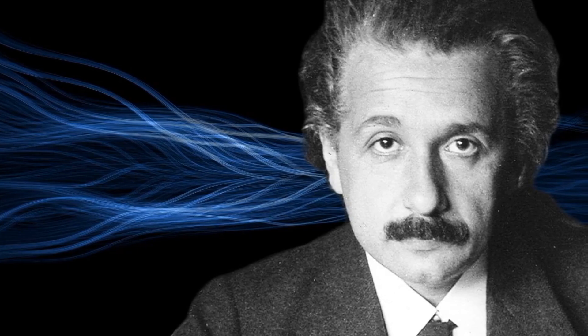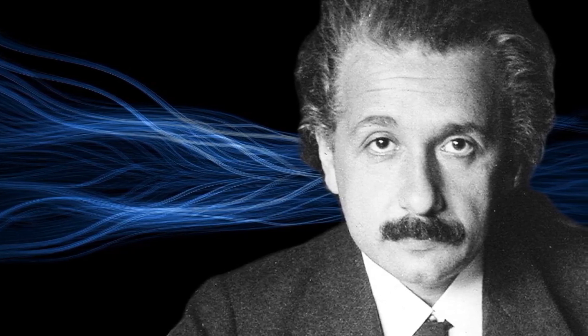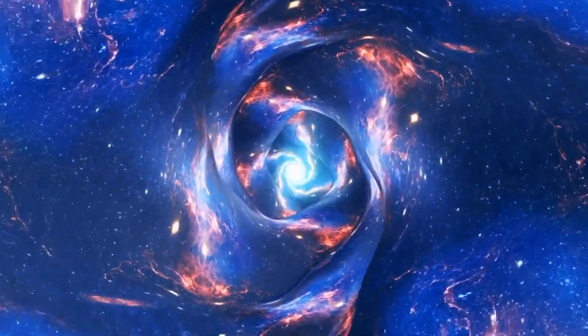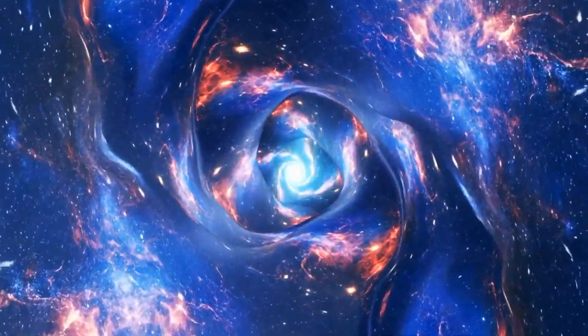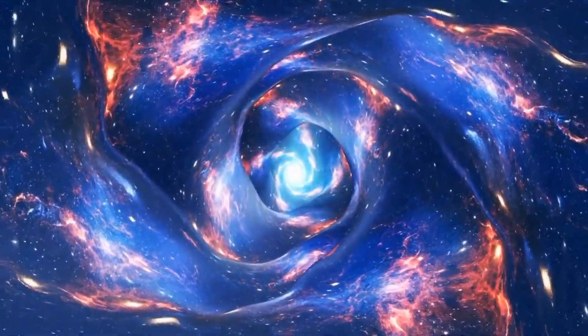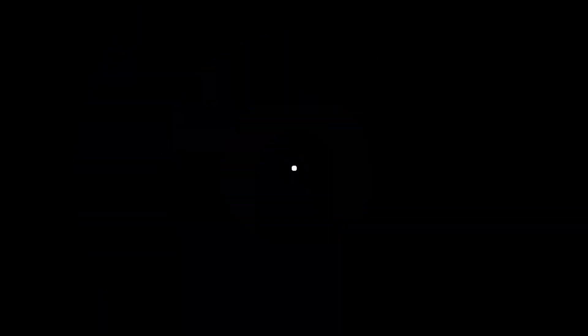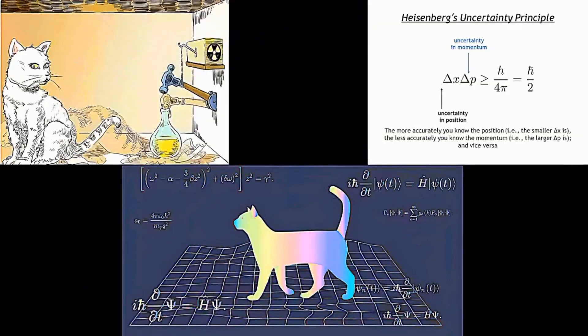Einstein's reluctance to fully embrace the probabilistic nature of quantum mechanics, as famously expressed in his quote that God does not play dice with the universe, reflects the profound conceptual shifts required by this revolutionary theory. Schrödinger's cat, Heisenberg's uncertainty principle, and the exploration of quantum superposition all pushed the boundaries of our understanding of reality at the smallest scales.